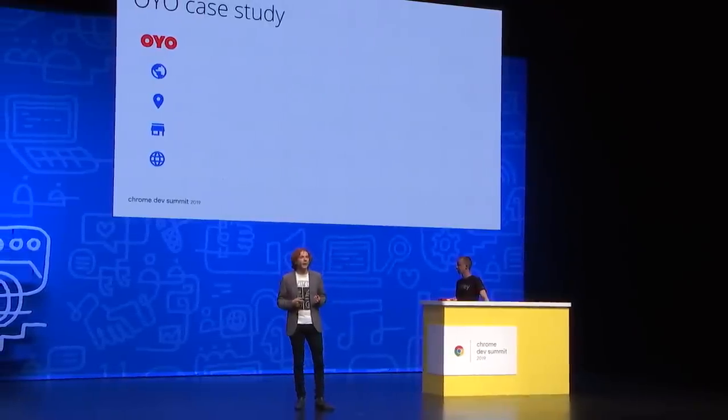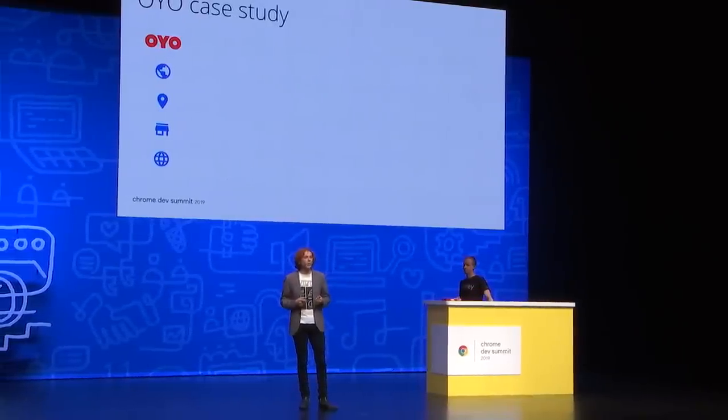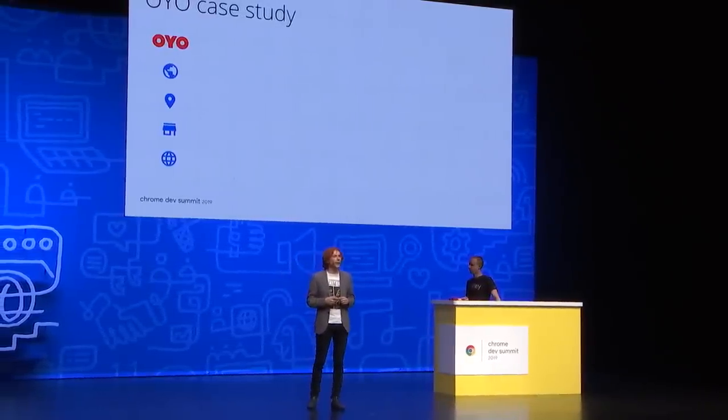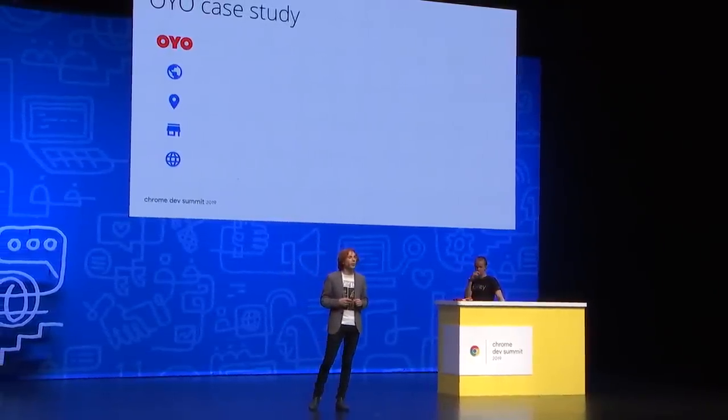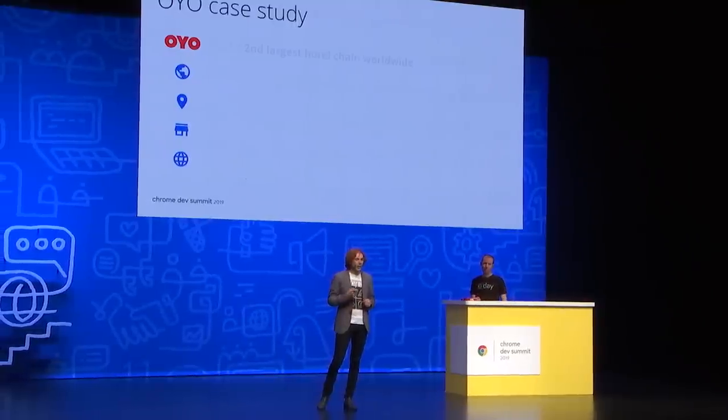As a little background: OYO is the world's second largest hotel chain, with a presence in more than 80 countries and more than 23,000 hotels. With rapid growth, they've basically pursued mobile web as a key demand channel. Lukund is going to take you through what's happened with their mobile web experience and how they've grown in the last year. Please welcome Lukund.